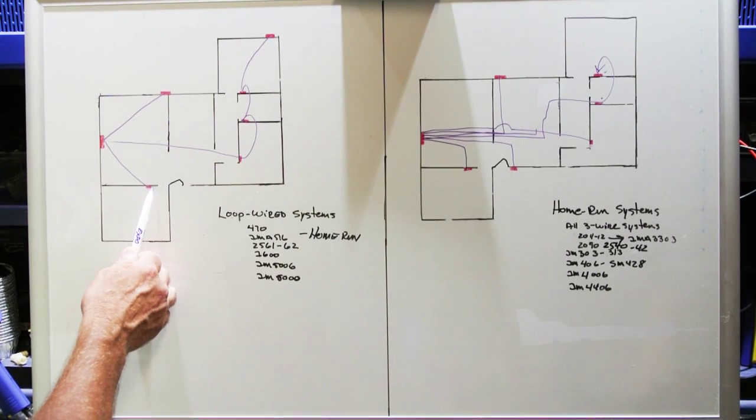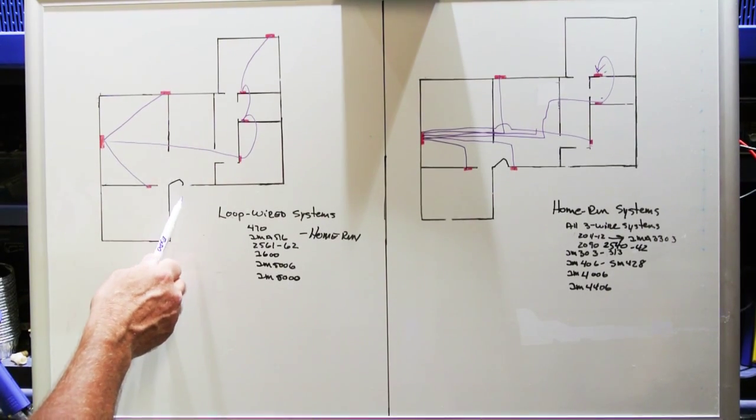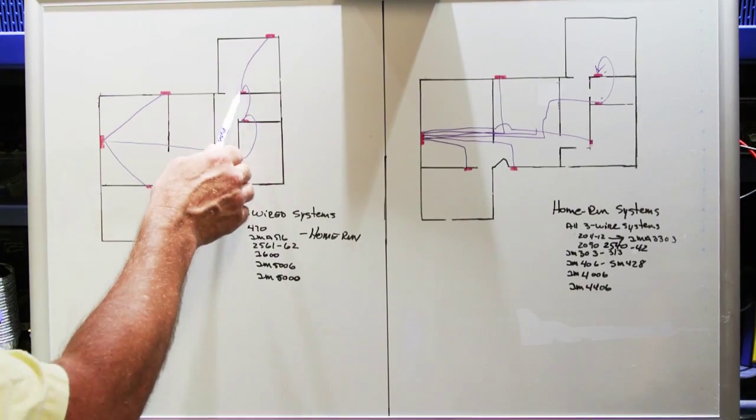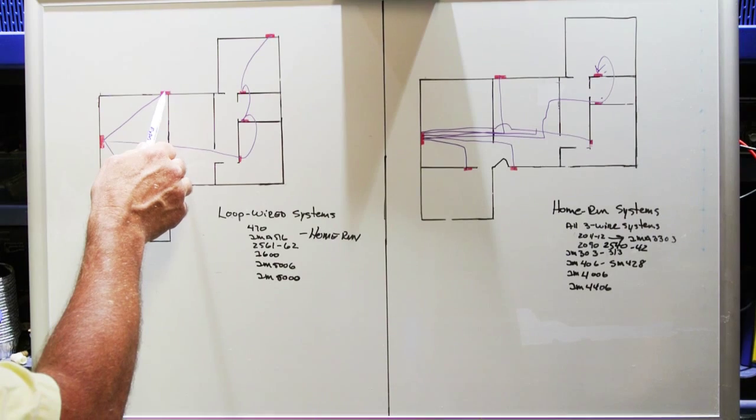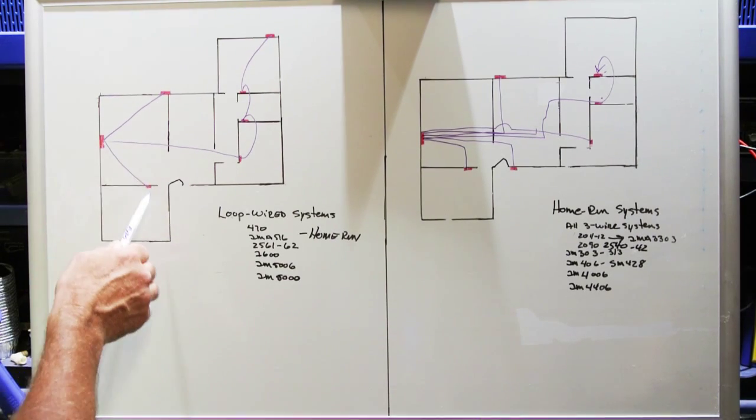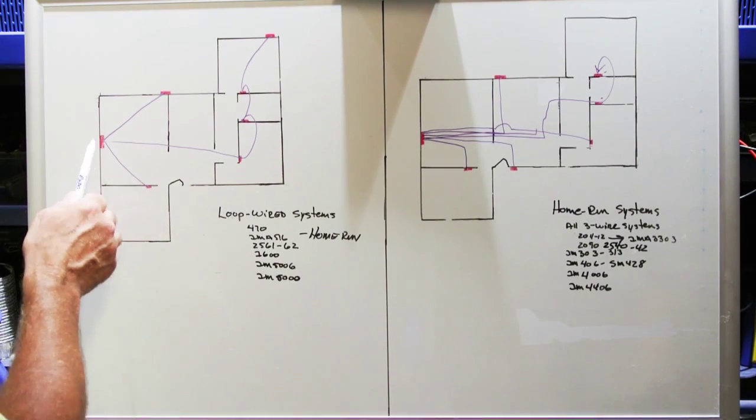So here we have what would be in the real world a very typical installation where you have four speakers on a loop that run back to the master, but you have a patio speaker that's home run and you have the den speaker that's home run.